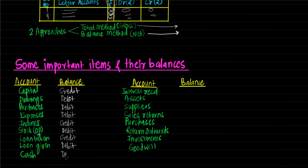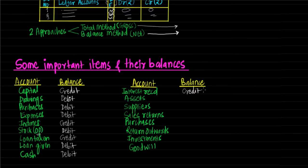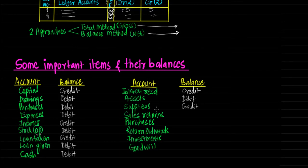Cash will always have a debit balance. Cash is a real account, and also it is an asset for us — any asset would generally have a debit balance only. Interest received is income for us; nominal account rule says 'credit all incomes and gains.' Assets would always have a debit balance. Supplier's account has a credit balance because suppliers give goods to us — we purchase from them, so they are creditors, and the rule says 'credit the giver.'